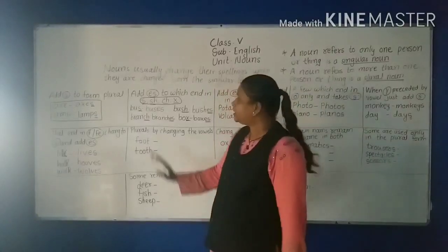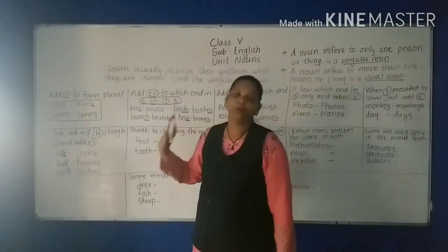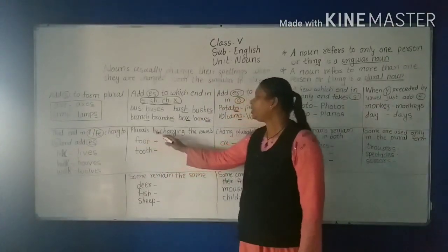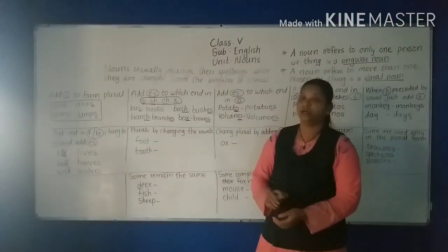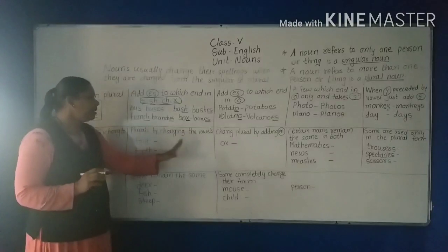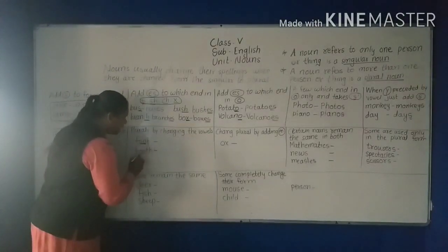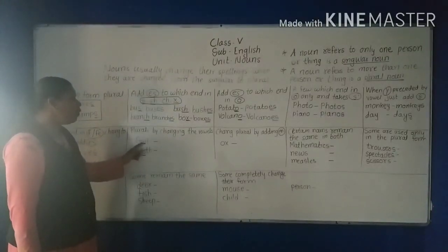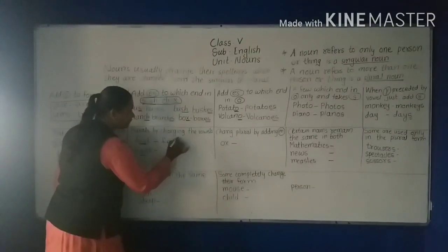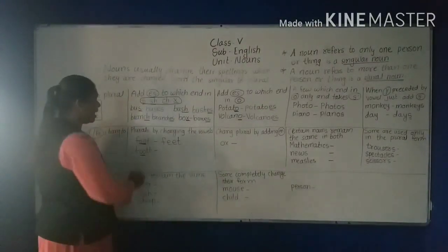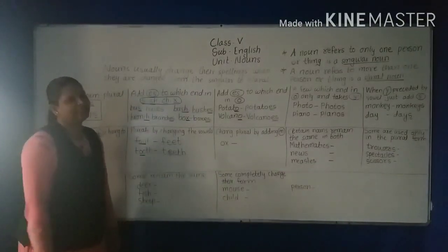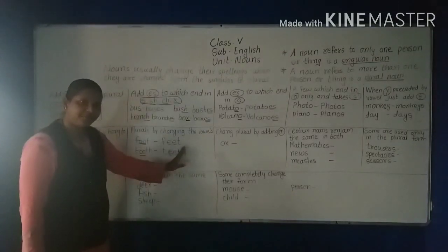Some nouns form plurals by completely changing the word. All the rules are in your grammar book, so keep it open. For example, 'foot' — the 'oo' changes to 'ee' — becomes 'feet'. Similarly, 'tooth' becomes 'teeth'. For 'ox', we add 'en' to get 'oxen'.